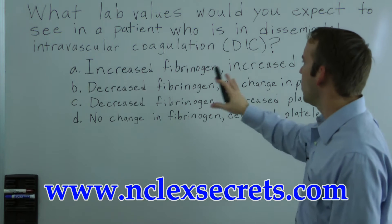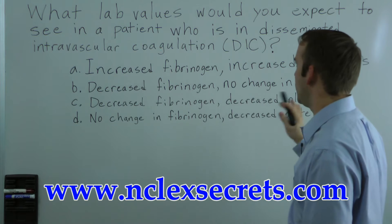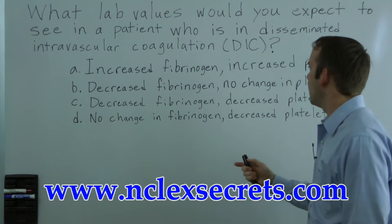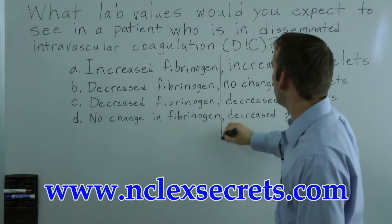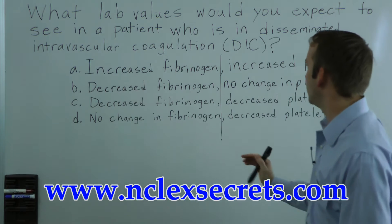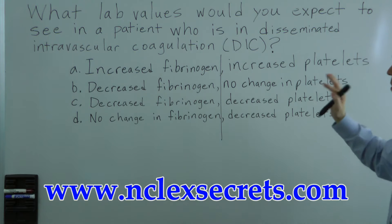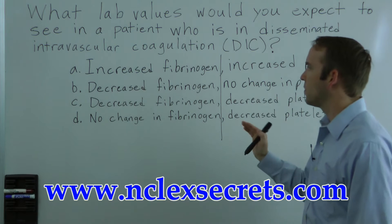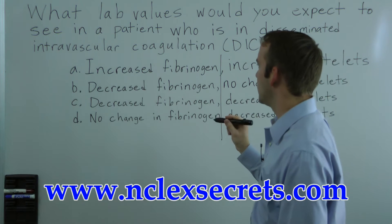Now, what are the commonalities that we can identify? As you can see, there are two main sections here. You have this value that's going to change, and then you have this value. So this is a great setup when you have two different values for your answer choices.